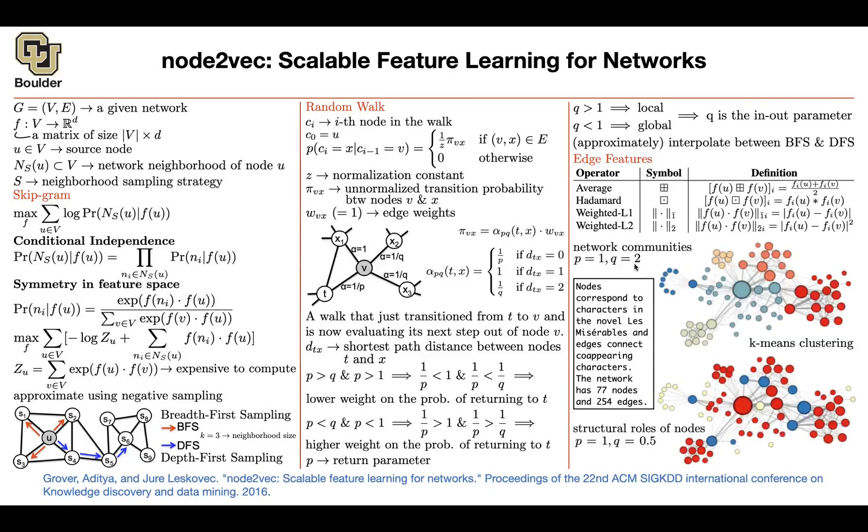But intuitively, let's study Q. We studied two cases. One was Q bigger than one. One was Q less than one. And let's apply it on the novel Les Misérables. On the data coming from that, you have 77 nodes and these many edges in that graph.